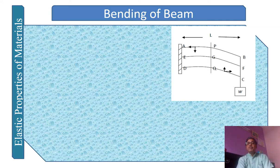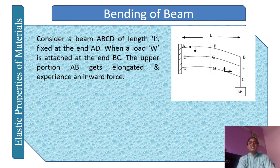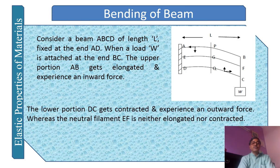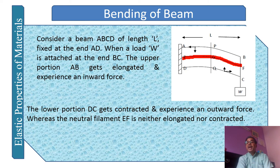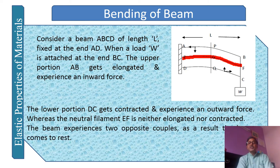Considering the beam ABCD of length L with load W applied: the upper surface AB gets elongated and experiences a force, and the lower surface DC gets contracted and experiences an outward force. The neutral filament EF has no elongation or contraction, so no force acts on it. The beam experiences two opposite couples, and as a result the beam comes to rest after a certain interval.